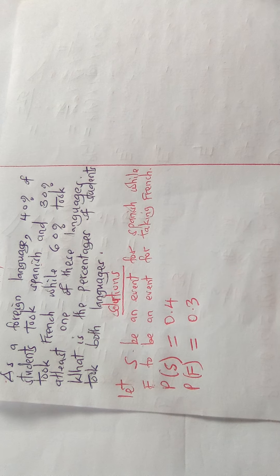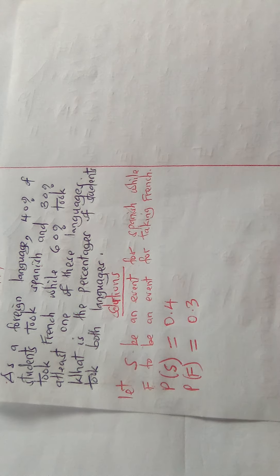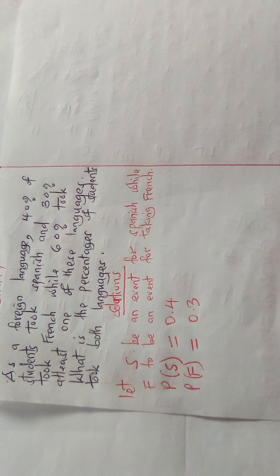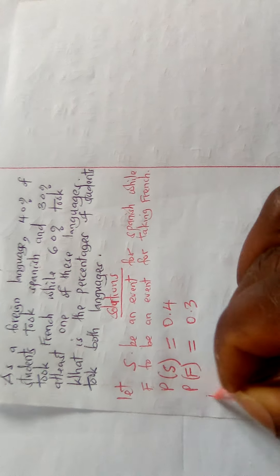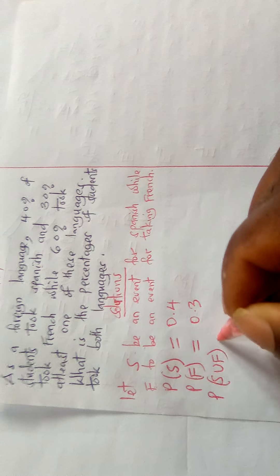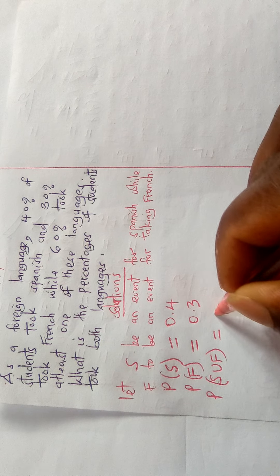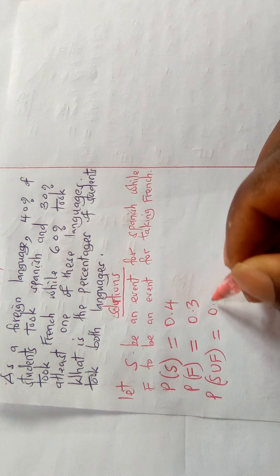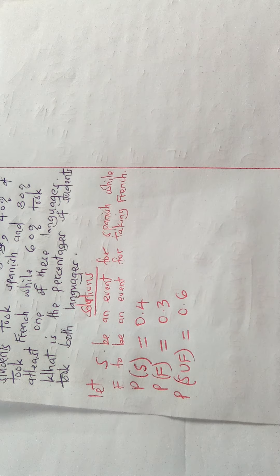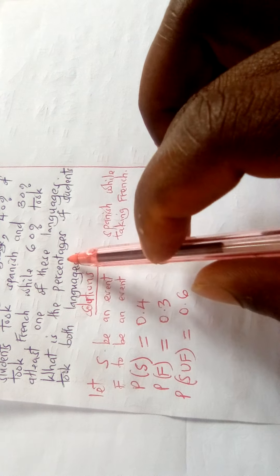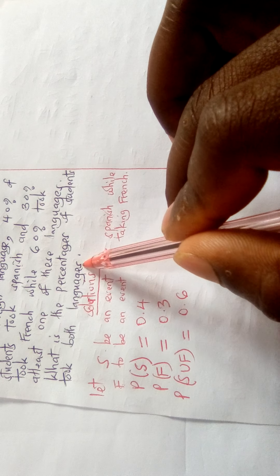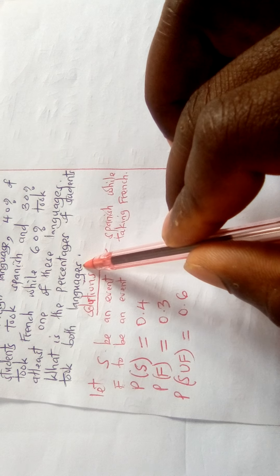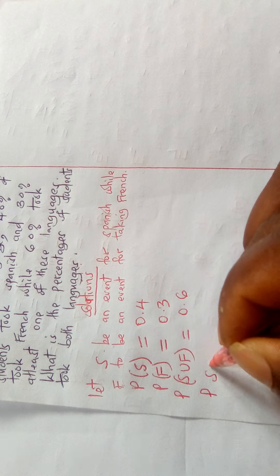Lastly, we've been told that 60% took at least one of these languages. 'At least one' means we need the union of the two languages, so P(S ∪ F) = 60%, which in decimal is 0.6. The question asks for the percentage of students taking both languages, which means we need the intersection: P(S ∩ F).